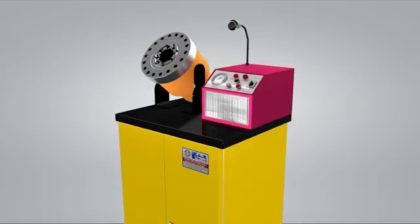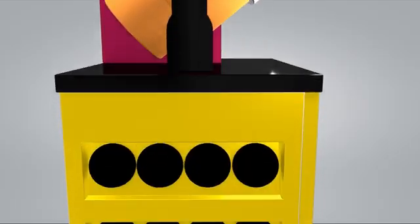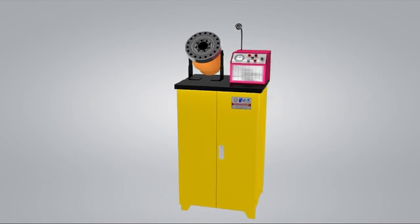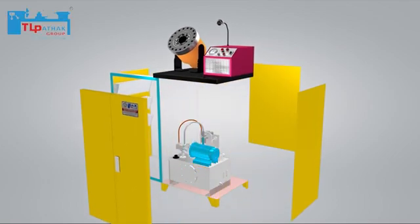Presenting Hose Crimping Machine by TL Podic Group. A crimping machine helps to crimp the fittings on the hose ends, which enables the hose assembly to connect with the intended flow system.